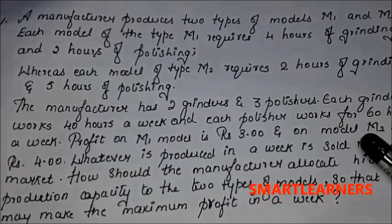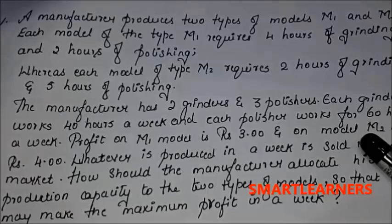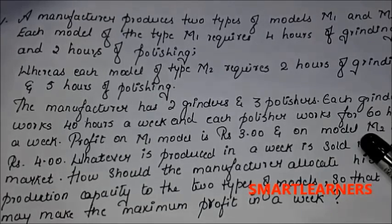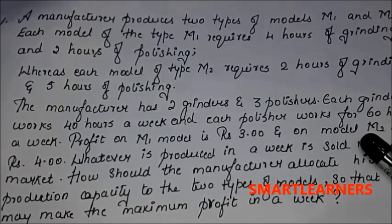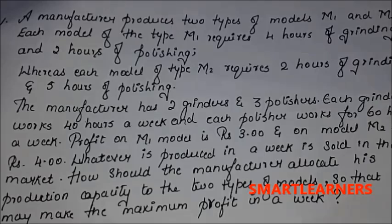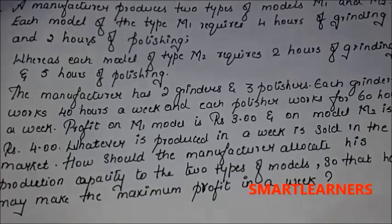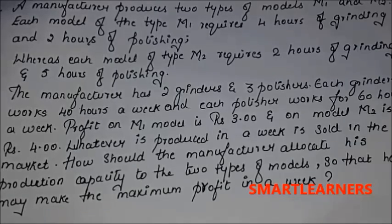Here is a question: a manufacturer produces two types of models, M1 and M2. Each model of type M1 requires four hours of grinding and two hours of polishing, whereas each model of type M2 requires two hours of grinding and five hours of polishing. The manufacturer has two grinders and three polishers. Each grinder works 40 hours a week and each polisher works 60 hours a week. Profit on M1 is rupees 3 and on M2 is rupees 4. Whatever is produced in a week is sold in the market. How should the manufacturer allocate his production capacity to maximize profit in a week?